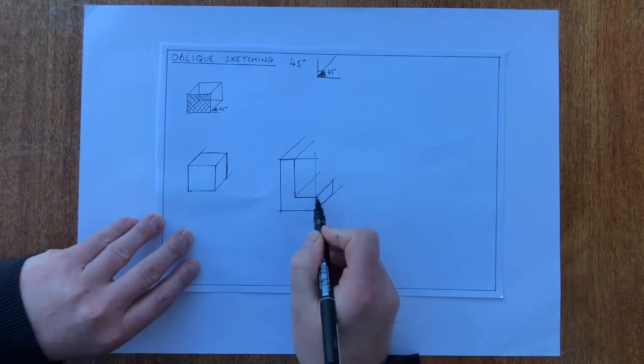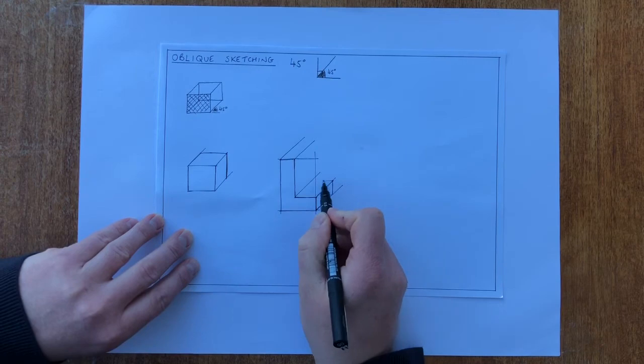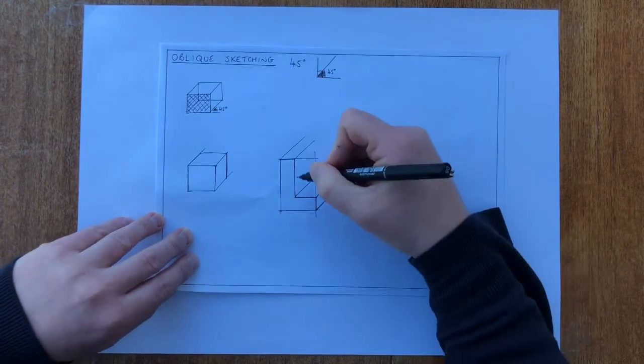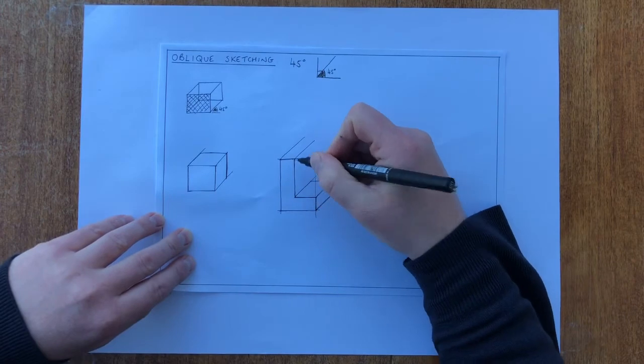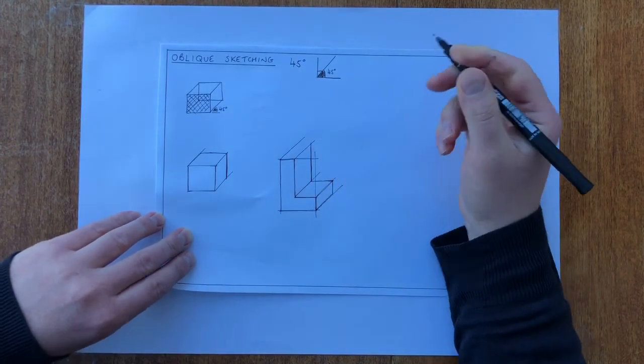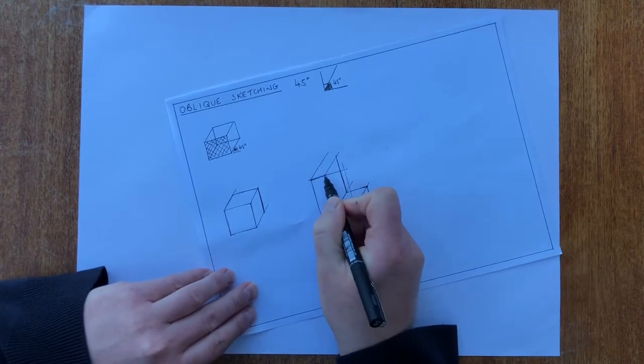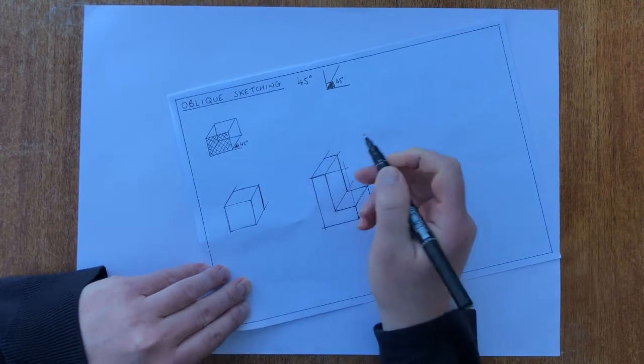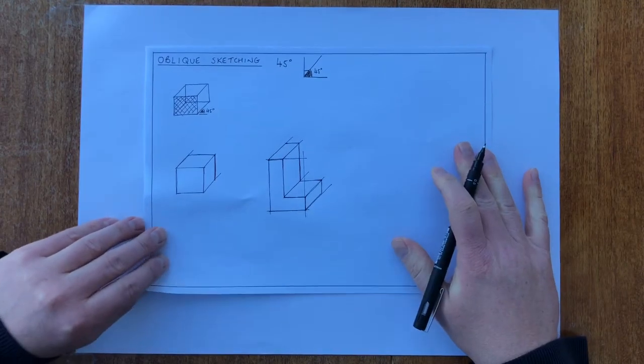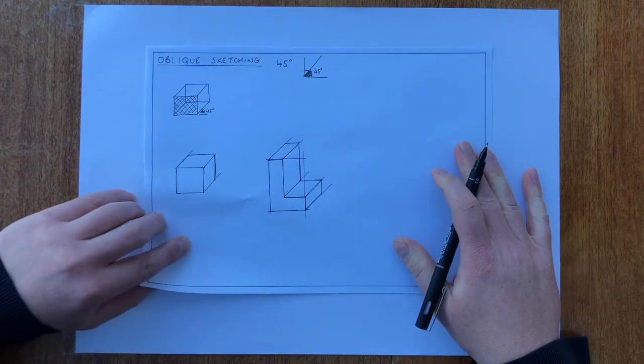At this point here we have a horizontal line, so I'm going to draw a horizontal line just here. This line here at the front is a vertical line, so I'm going to draw a vertical line at this position here. And last of all we have a horizontal line at the top, and again a horizontal line just here. And we have a 3D L shape drawn in oblique.